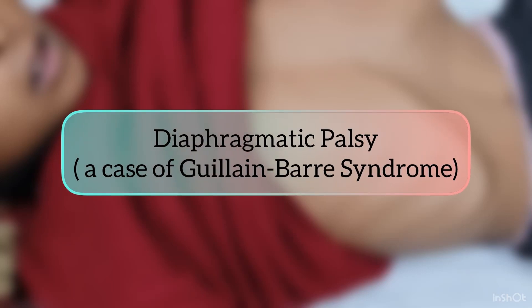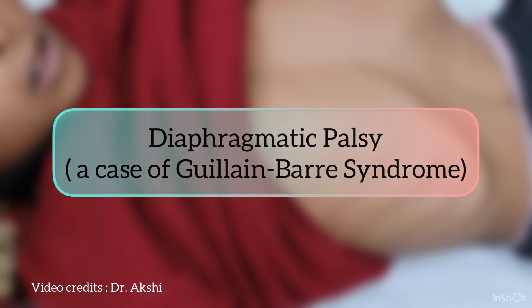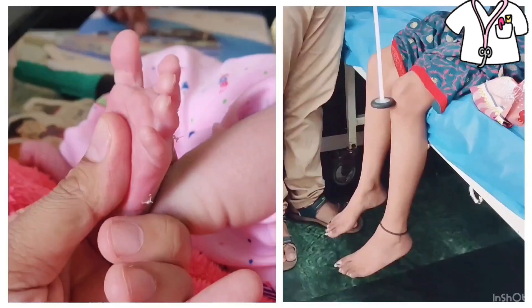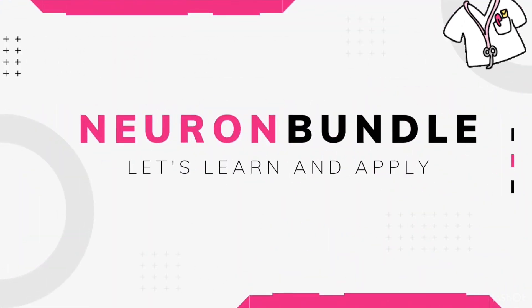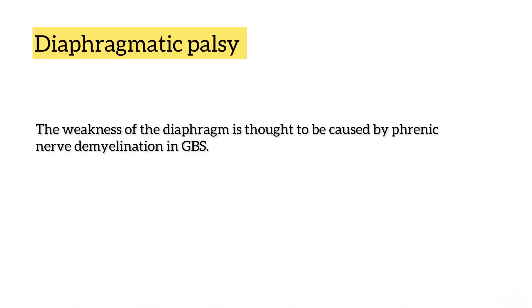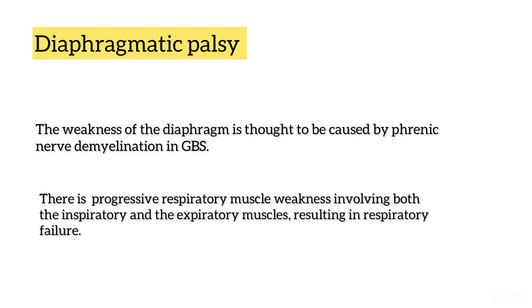Hello friends. In today's video we are going to show you a patient of diaphragmatic palsy secondary to Guillain-Barré syndrome. The weakness of the diaphragm is thought to be caused by phrenic nerve demyelination in Guillain-Barré syndrome. There is progressive respiratory muscle weakness involving both the inspiratory and expiratory muscles, resulting in respiratory failure.